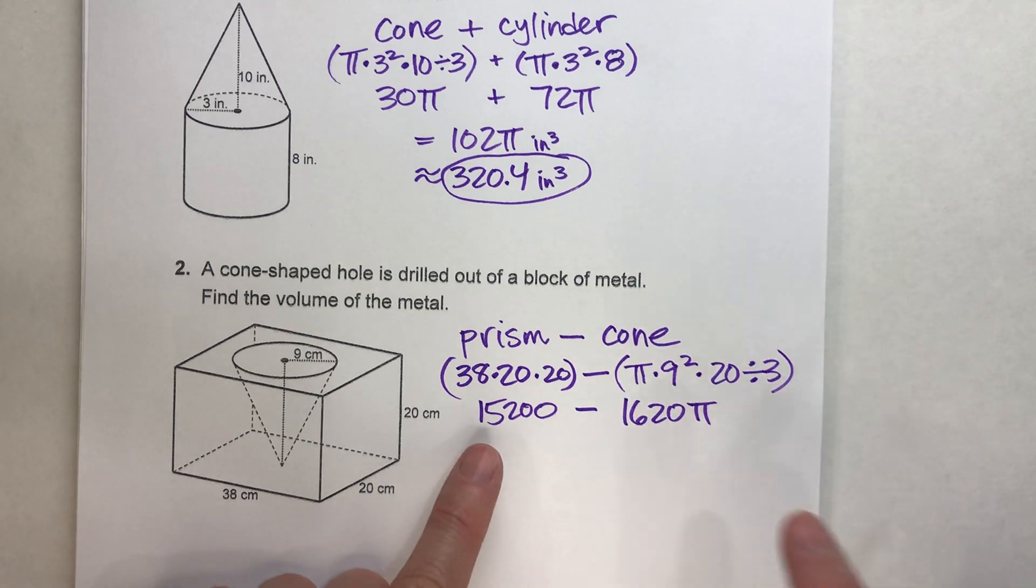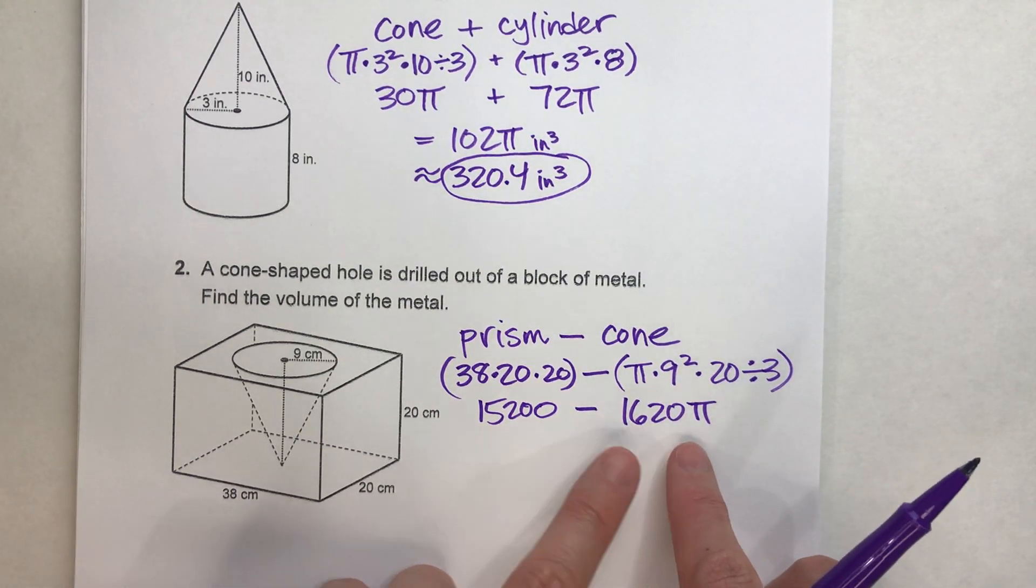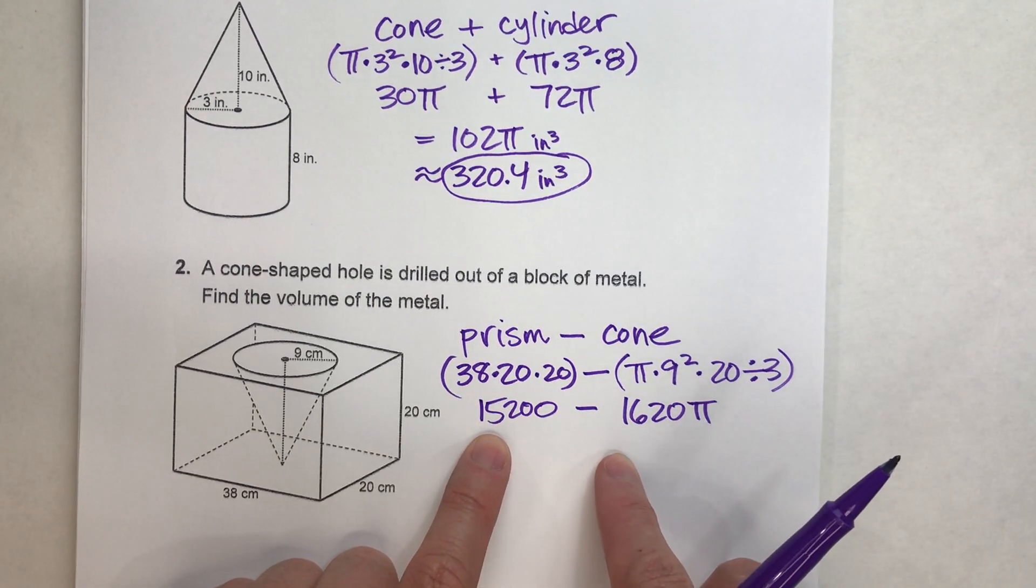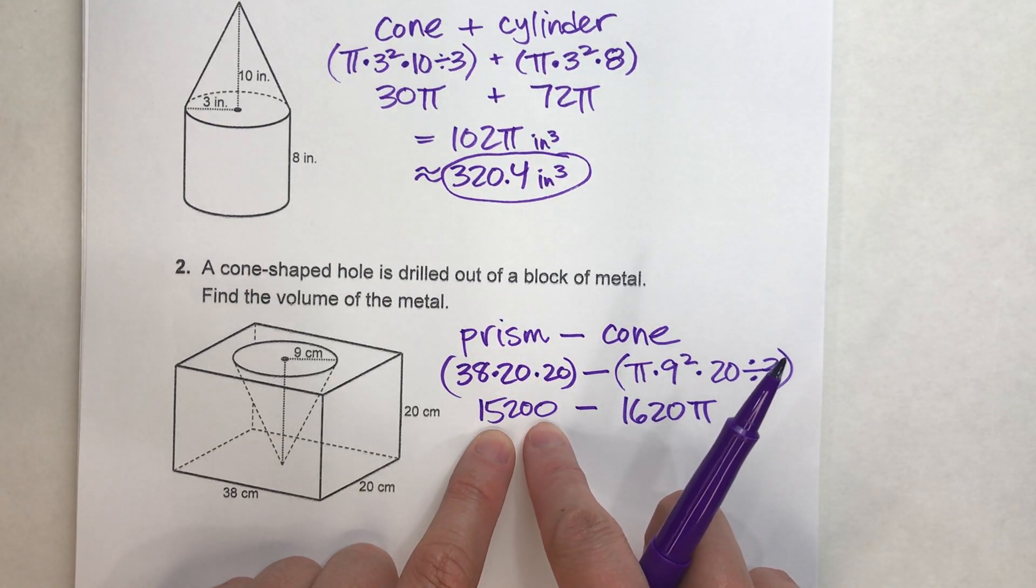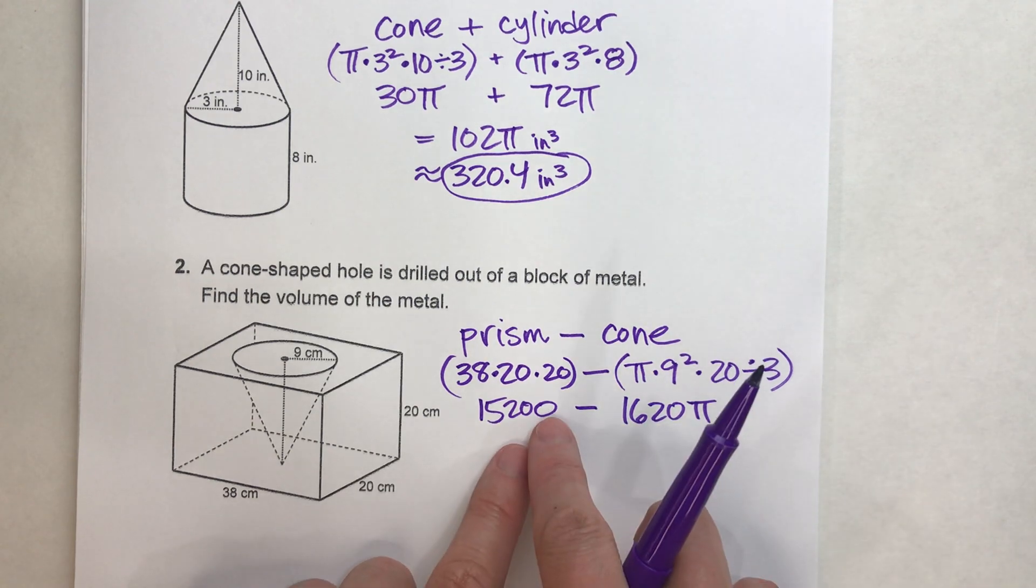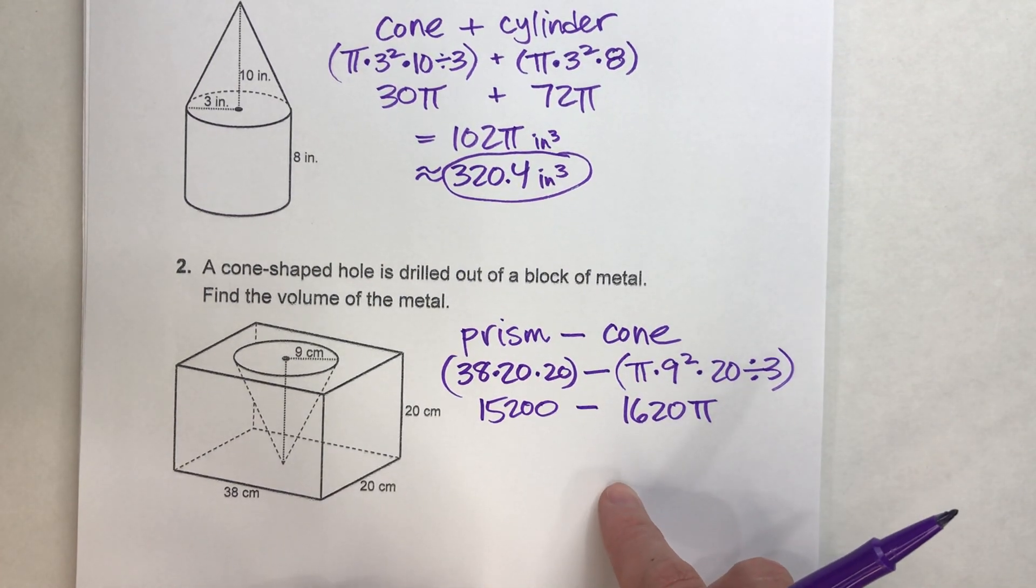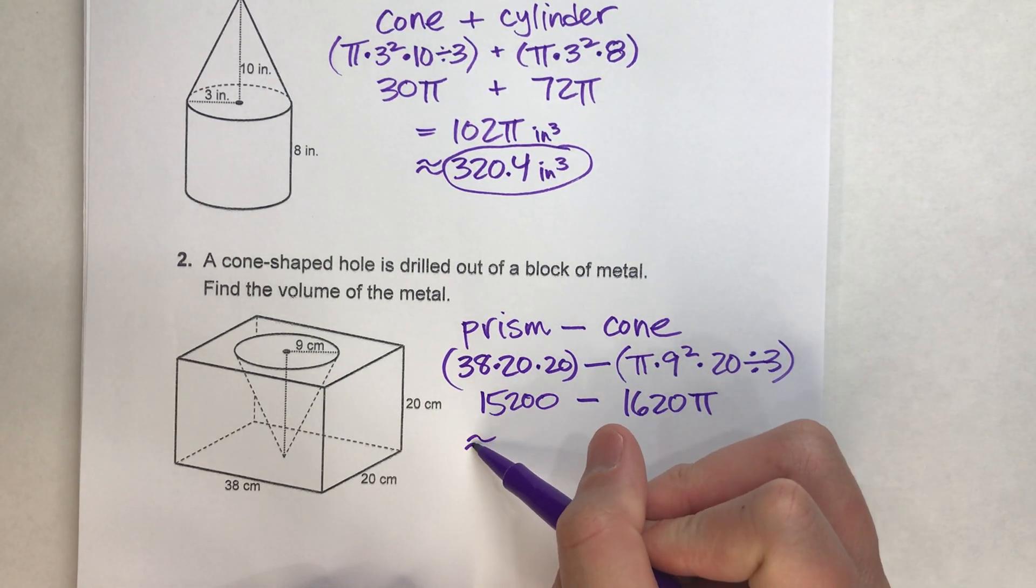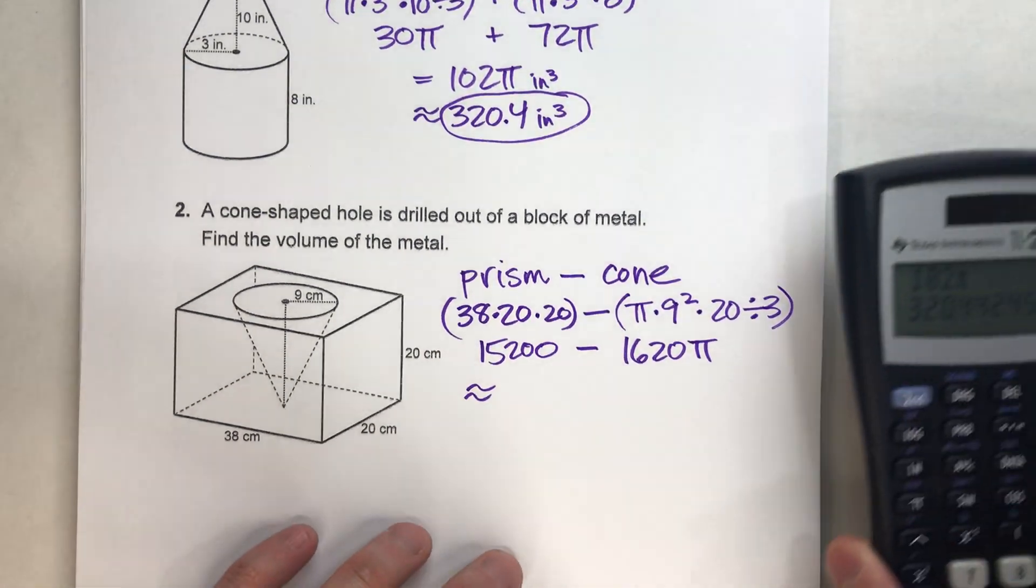And notice, like I said before, we've got pi over here, we don't have pi over here, so we can't simplify this anymore. We can't do 15,200 minus 1620, because this one doesn't have pi, and this one does. So at this point, if we want to get our final answer rounded to the 10th, we're just going to have to stick this whole thing into the calculator.